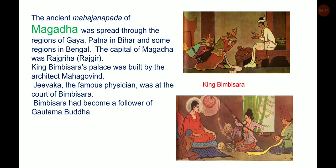The ancient Mahajanapada of Magadha was spread through the region of Gaya and Patna in Bihar and some regions in Bengal. The capital of Magadha was Rajagriha, i.e. Rajgir. King Bimbisara's palace was built by the architect Mahagovinda. Jivaka, the famous physician, was at the court of Bimbisara. Bimbisara had become a follower of Gautama Buddha.